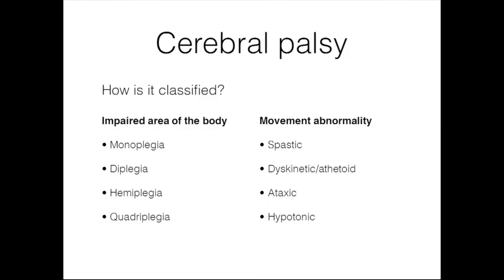So how is cerebral palsy classified? Historically, we've classified cerebral palsy based on the impaired area of the body and the movement abnormality. Monoplegia refers to only one limb affected — that's pretty rare. Diaplegia refers to all four limbs affected, but the legs are much more affected than the arms. Hemiplegia refers to involvement of just one side of the body, so one arm and leg on one side. And quadriplegia refers to involvement of all four limbs.